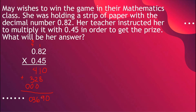This is not yet our final answer. We need to count the decimal places so we can place our decimal point. Right now we have one, two, three, four decimal places. So: one, two, three, and four. Our final answer is 0.3690.